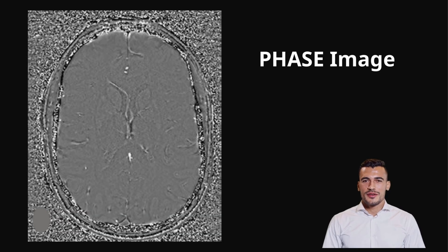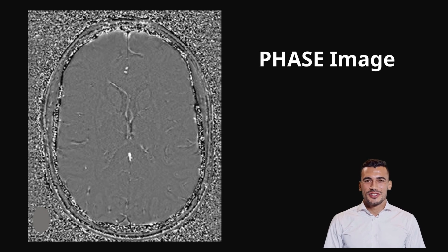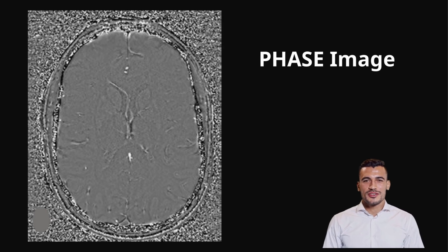This is the phase image — possibly the one you ignore while reviewing an MRI brain, and yes, it's the hardest to interpret among the components of SWI imaging. The phase image shows how the local magnetic field is distorted, helping us tell whether that dark area is due to a paramagnetic substance like blood, or a diamagnetic one like calcium. We will learn how to interpret these images further in this video.